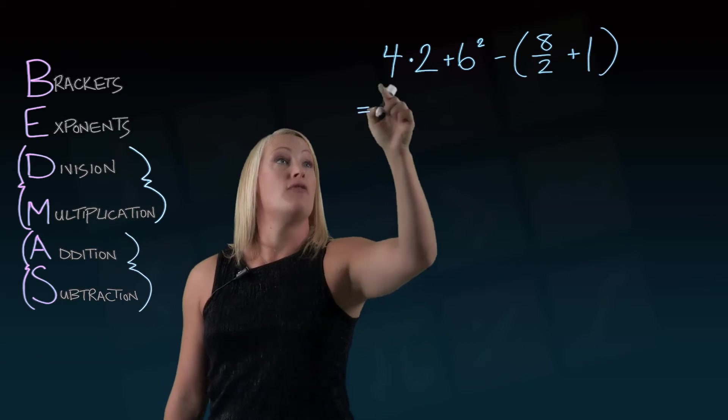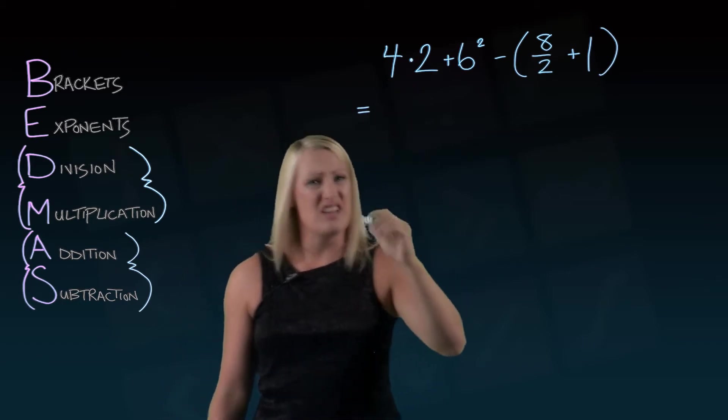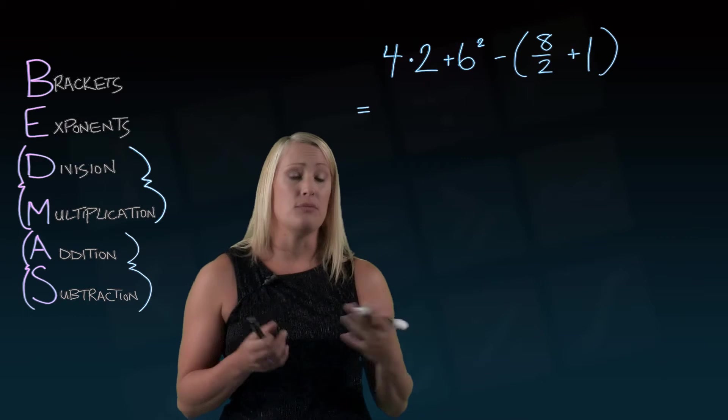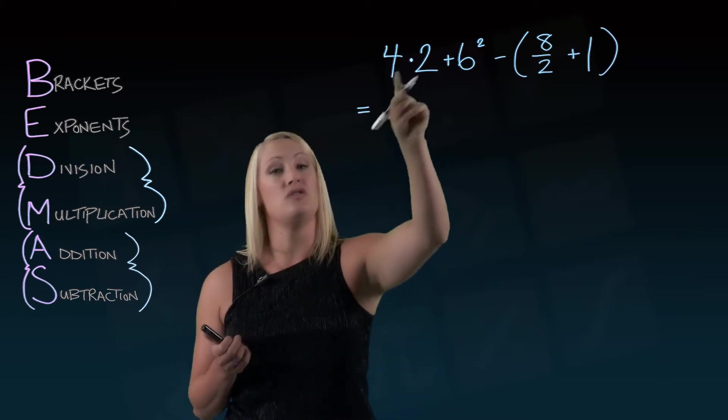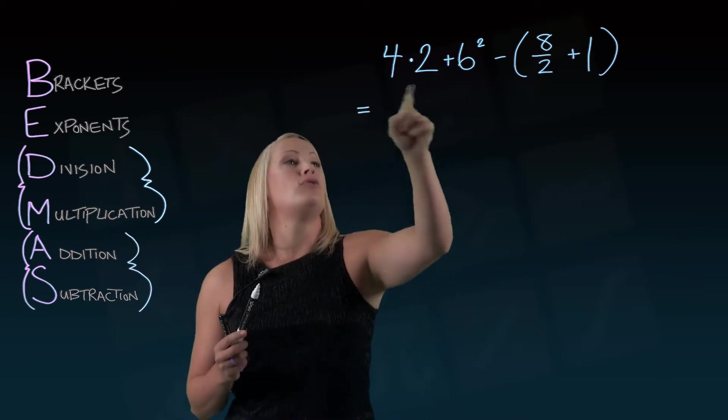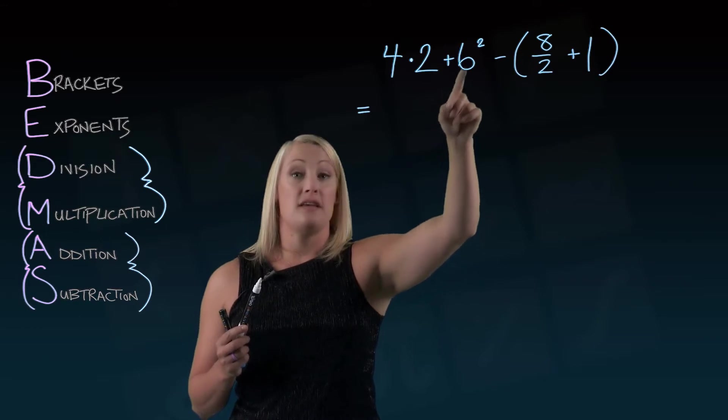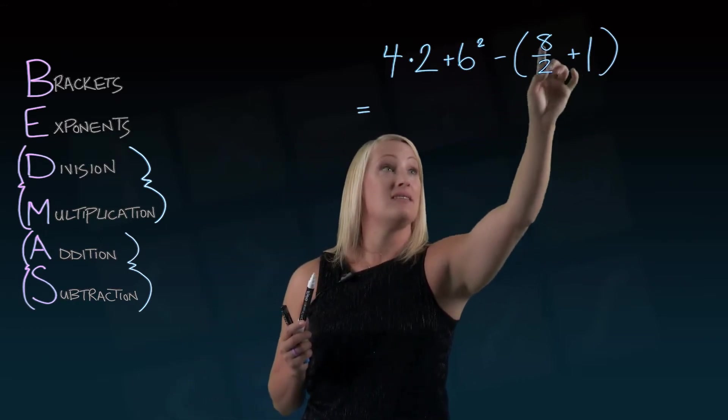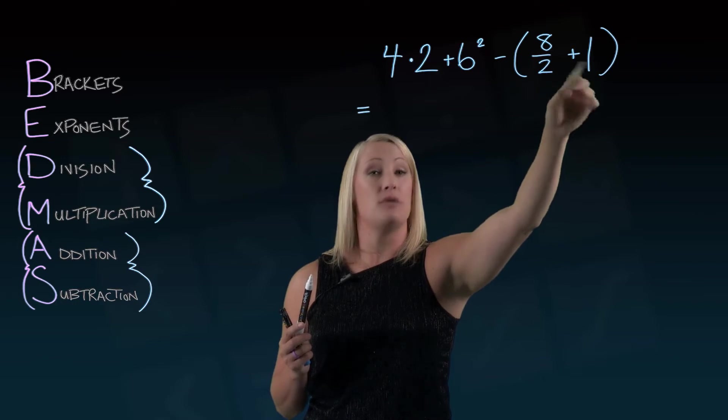So I have 4. That dot means times. I don't want to use an X because sometimes you can think that maybe that's the variable X. So we'll use a dot for multiply. 4 times 2 plus 6 to the power of 2. Subtract. And then in brackets, 8 divided by 2 plus 1.